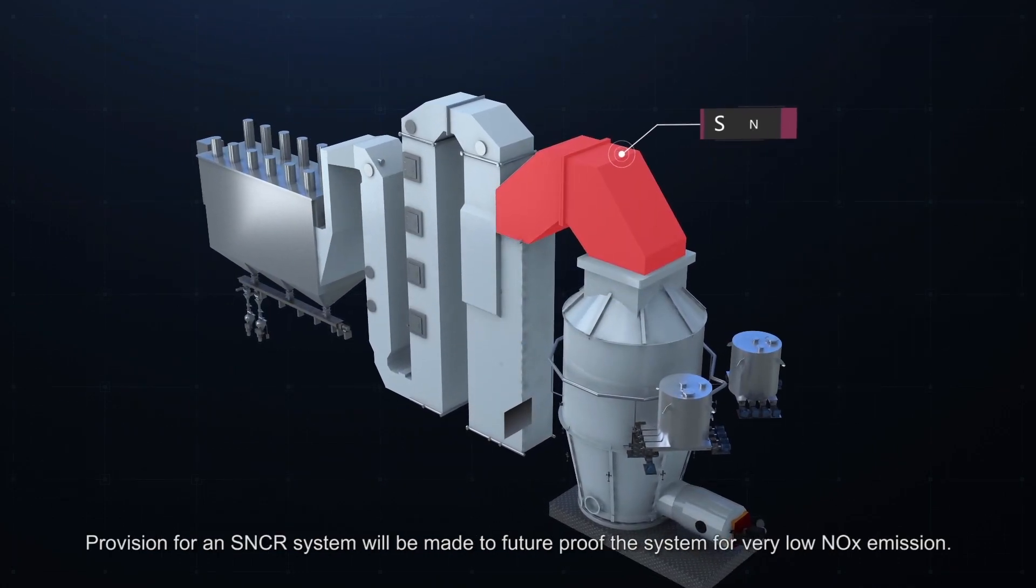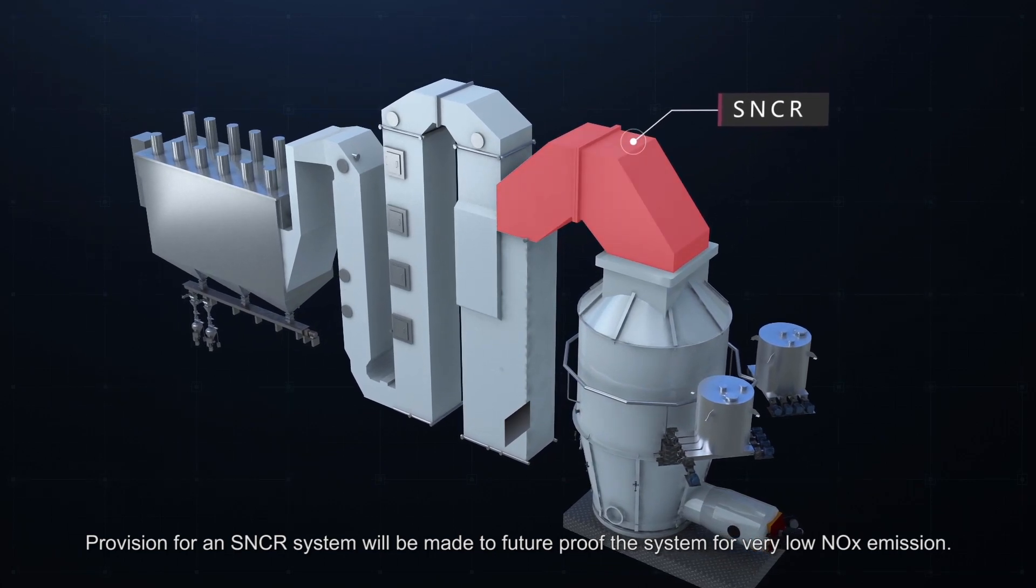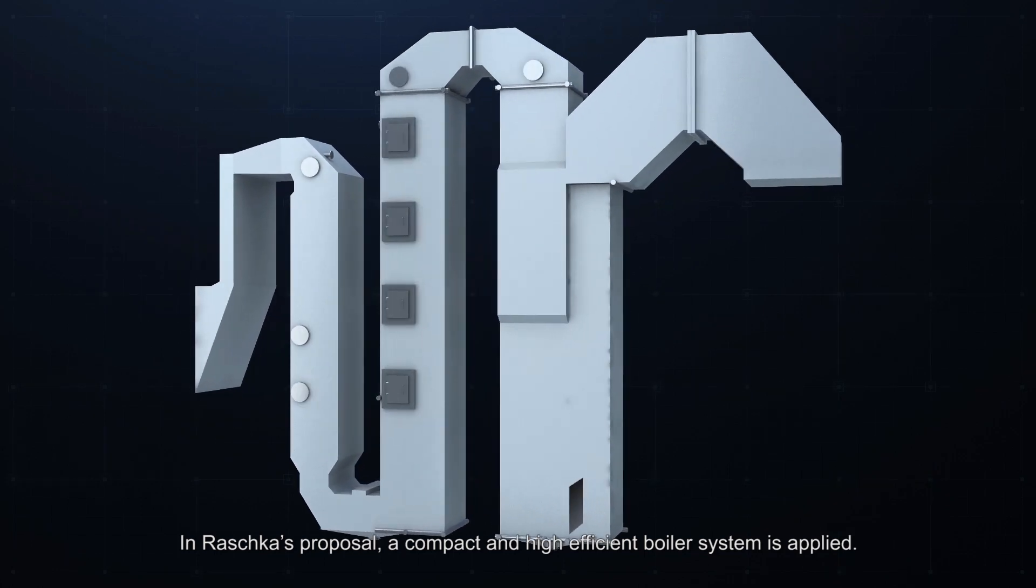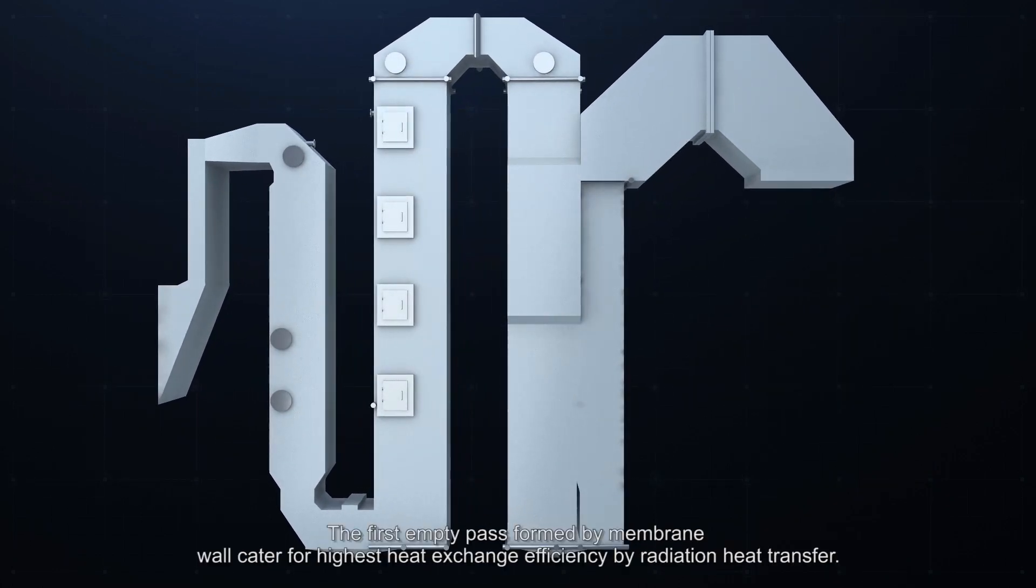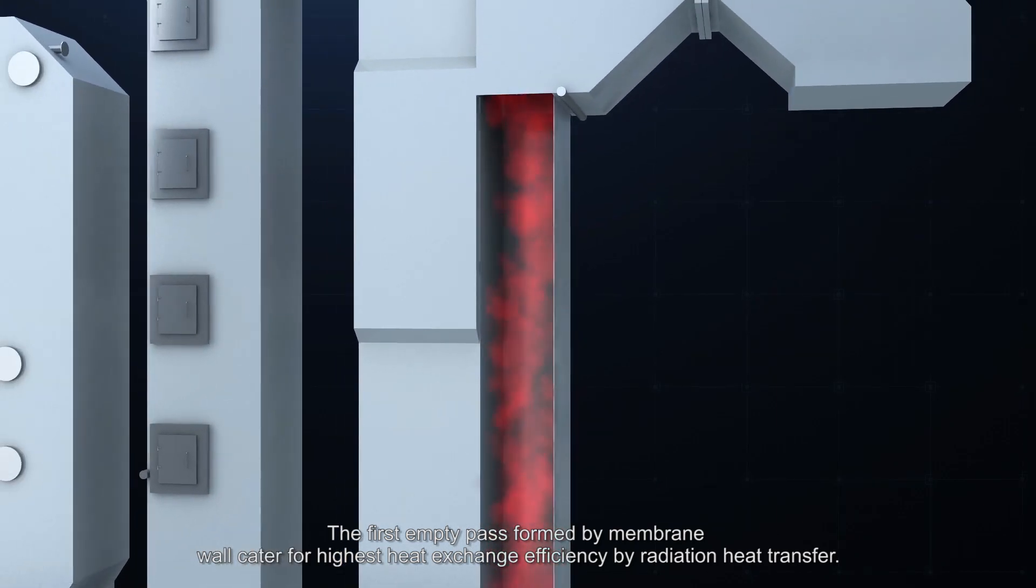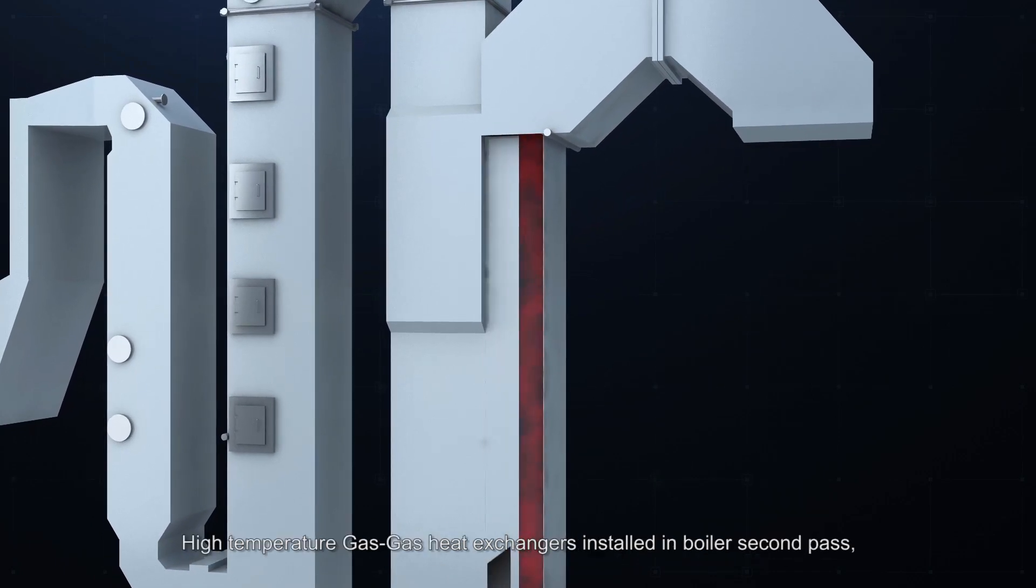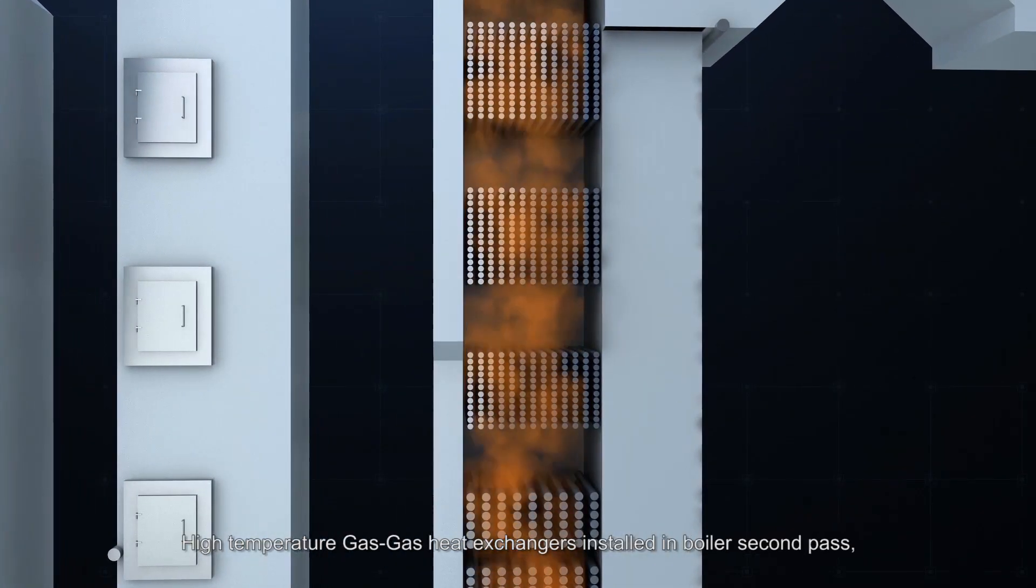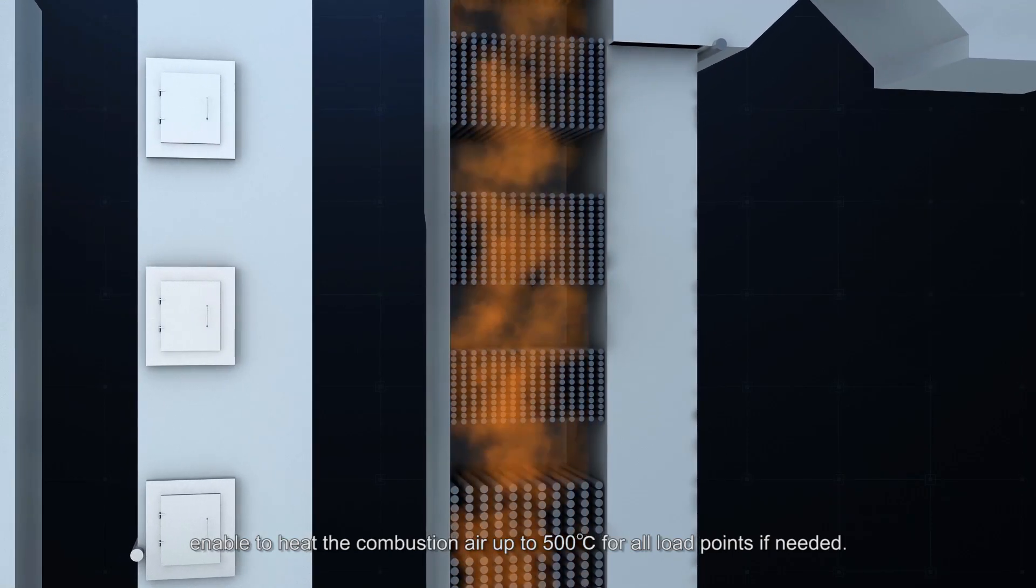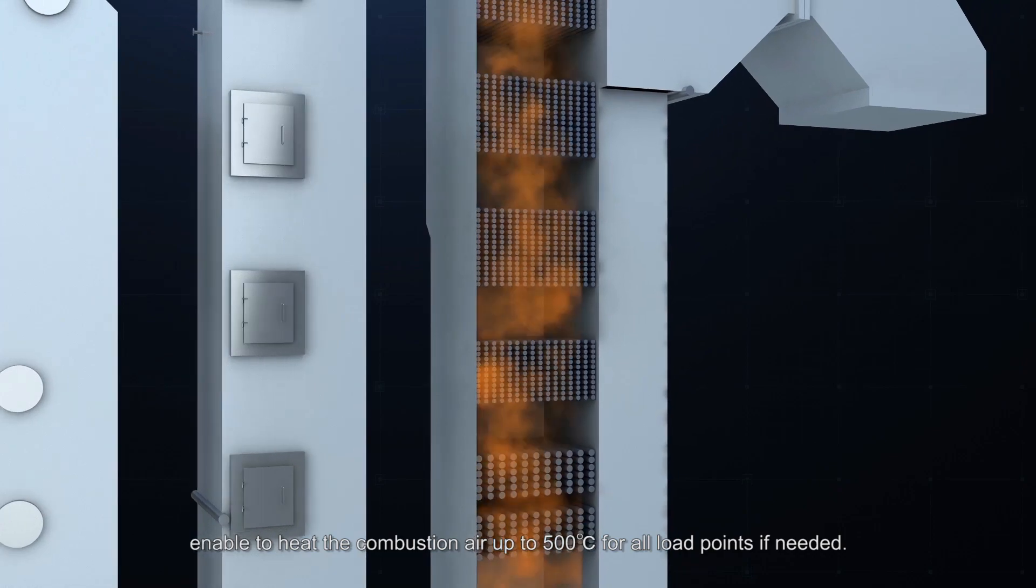Provision for an SNCR system will be made to future-proof the system for very low NOx emission. In Raschke's proposal, a compact and high-efficient boiler system is applied. The first empty pass formed by membrane wall cater for highest heat exchange efficiency by radiation heat transfer. High-temperature gas-to-gas heat exchangers installed in boiler second pass enabled to heat the combustion air up to 500 degrees Celsius for all load points if needed.